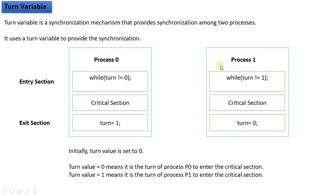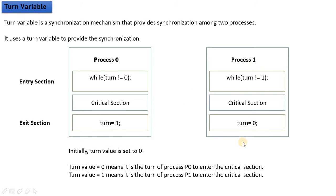This means they alternate — it is strict alteration. Strictly, these two processes take turns to enter the critical section. Turn value 0 means Process 0 is in the critical section, and turn value 1 means Process 1 is in the critical section. They alternate: first Process 0 executes, then turn goes back to 0, then 1.